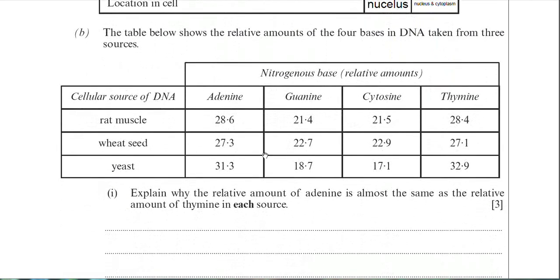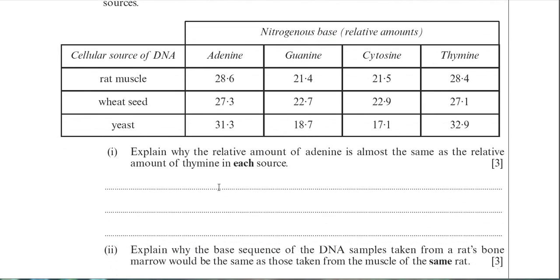Moving on to part B. We have a table here which you should be familiar with — there's a similar one in the notes accompanying this app. This is to do with Chargaff and his experiments, where he found that no matter what organism he looked at, the ratio of adenine to thymine was always one, and the ratio of guanine to cytosine was always one. That provides evidence of the base pairing rule. The question asks you to explain why the relative amounts of adenine are almost the same as the relative amounts of thymine in each source.